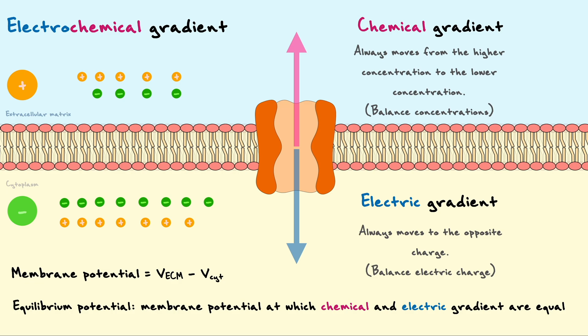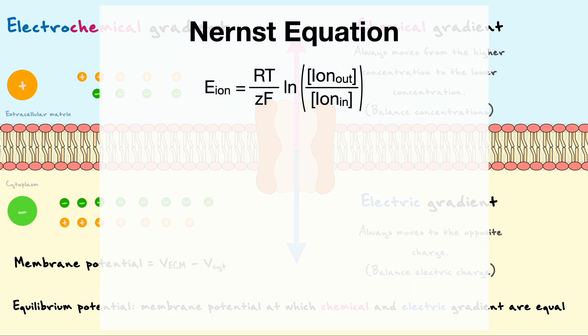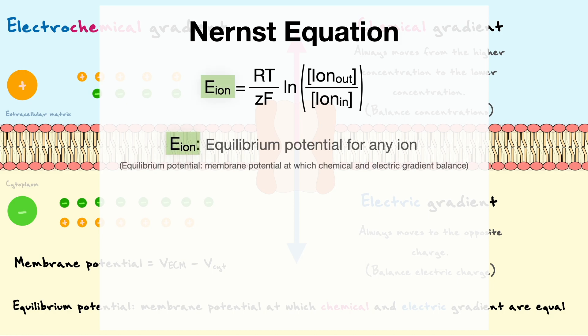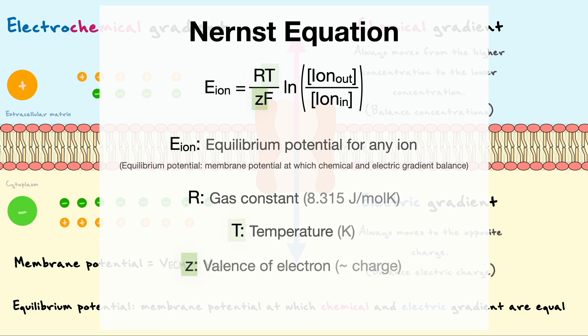The equilibrium potential for any ion can be mathematically computed with the Nernst equation. In this equation, the equilibrium potential for an ion is equal to the gas constant multiplied by the temperature in Kelvin divided by the valence of the electron, which is essentially its charge, multiplied by the Faraday constant, and all of this multiplied by the natural logarithm of the outside concentration of the ion divided by its inside concentration.